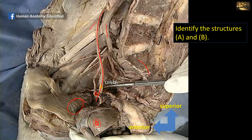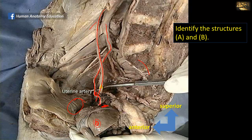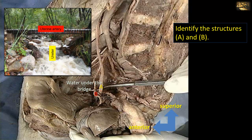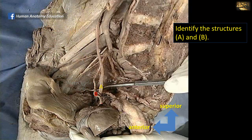If we look at structure B and follow it backwards, we see that it arises from the internal iliac artery — specifically the anterior division — and provides a branch that goes medially. It is located in the base of the broad ligament, which has been removed here, and it reaches the lower part of the uterus near the cervix. So the artery is the uterine artery. Notably, the uterine artery crosses above the ureter — this is classically described as the relation of 'water under the bridge': the water (urine in the ureter) passes under the bridge formed by the uterine artery.